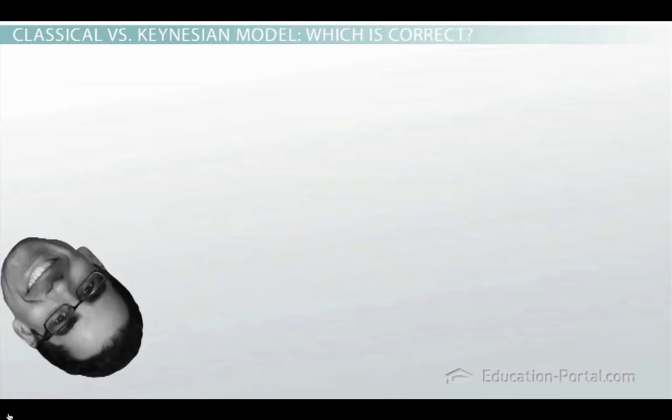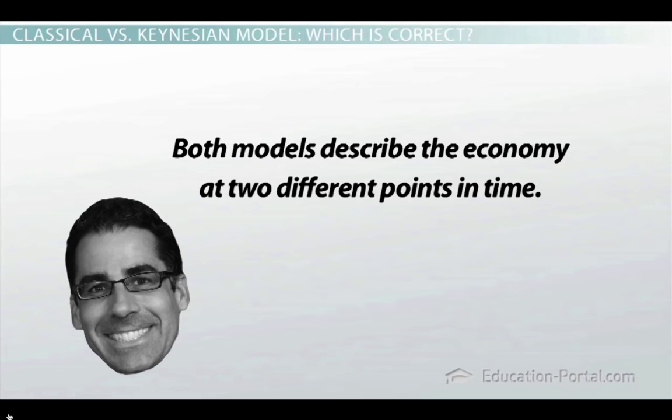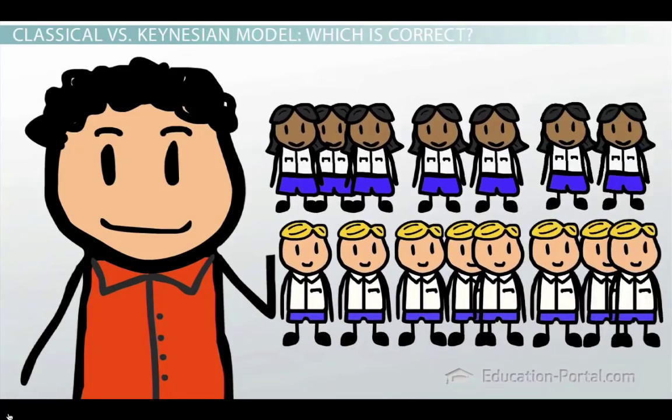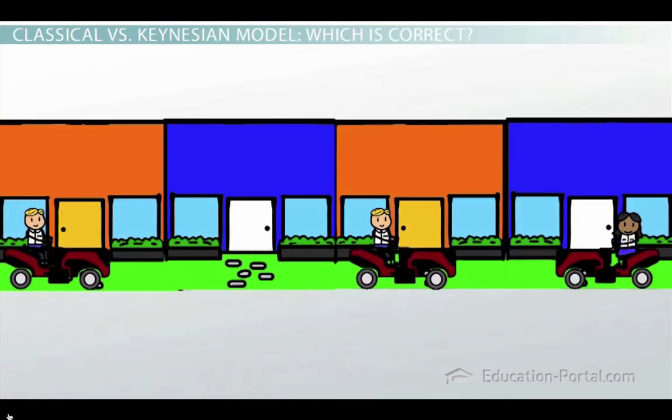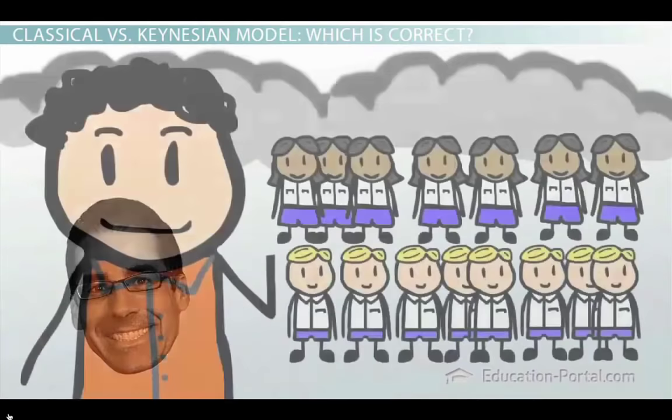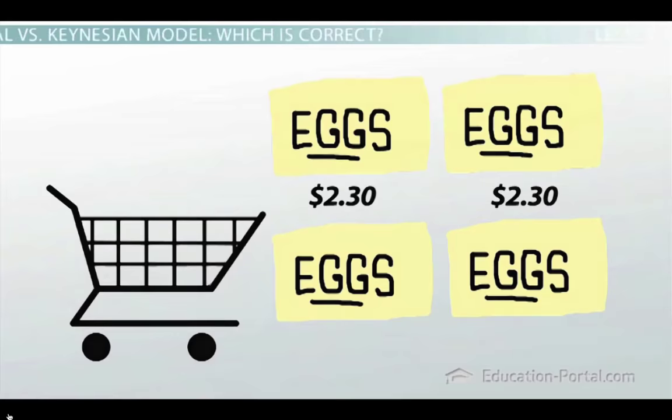When it comes to these two economic models, both of them are correct, because they're describing the economy at two different points in time. The classical model does a great job of describing the economy in the long run, where resources are fully employed and everyone is working. The Keynesian model does a great job of describing what happens when there's a recession and people are out of work, or when the economy is temporarily overheating and a shortage of workers takes place.